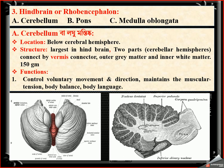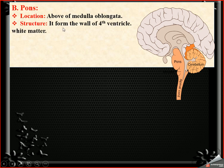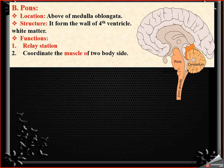The pons is located above the medulla oblongata. It forms the wall of the fourth ventricle and is made of white matter. Its function is to act as a relay station — sensory signals going to higher parts must pass through the pons. It also coordinates the muscles of both sides of the body and controls normal breathing.